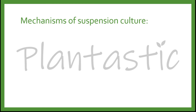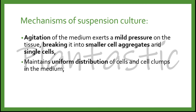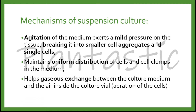The mechanisms of suspension culture are: the agitation of the medium exerts a mild pressure on the tissue, breaking it into smaller cell aggregates and single cells. It maintains uniform distribution of cells and cell clumps in the medium. It also helps gaseous exchange between the culture medium and the air inside the culture vial, which we refer to as aeration of the cells.